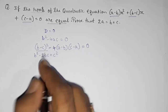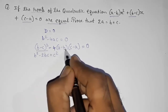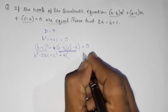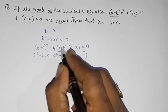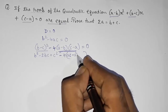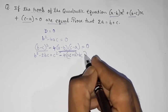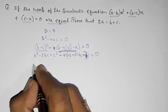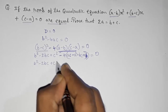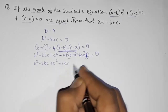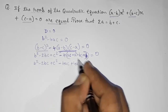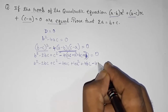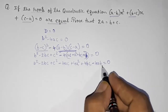Expanding: b squared minus 2bc plus c squared. Now multiply (a minus b) into (c minus a): that gives ac minus a squared minus bc plus ab. Then multiply minus 4 with all terms, giving: b squared minus 2bc plus c squared minus 4ac plus 4a squared plus 4bc minus 4ab equals 0.